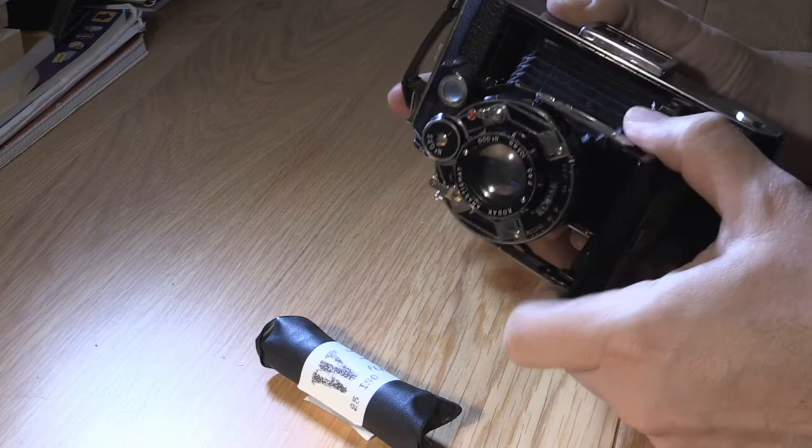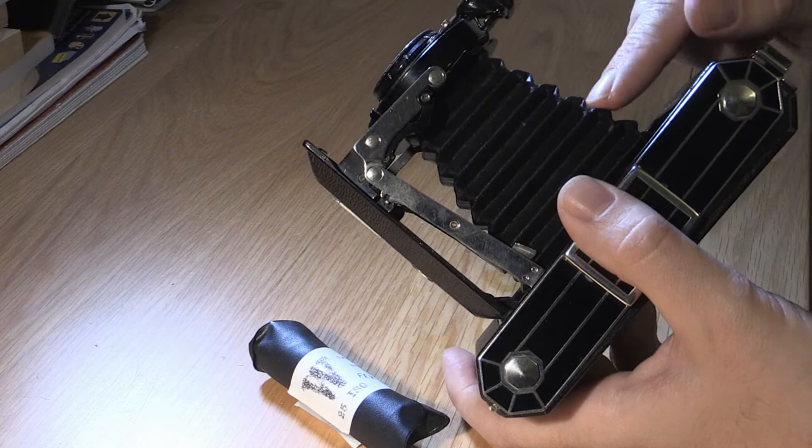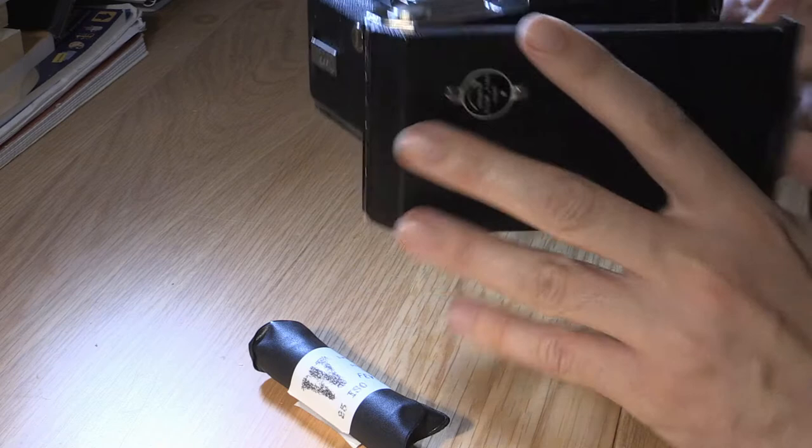So that's the bellows, lenses at the front. If you do actually ever want to buy one of these, the thing to look at quite carefully is the condition of the bellows, because obviously where these creases are, you could get light leaks.